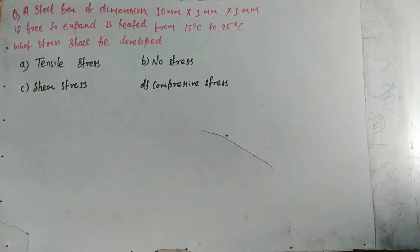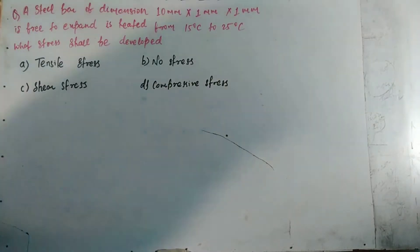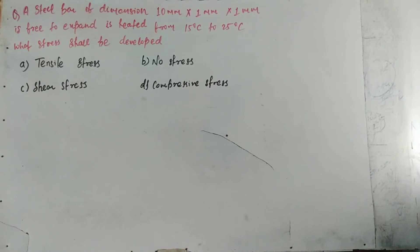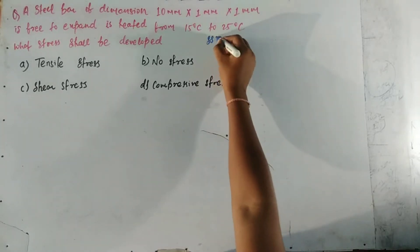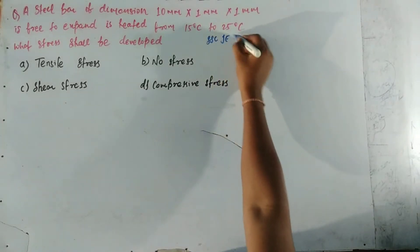The options are: A. Tensile stress, B. No stress, C. Shear stress, and D. Compressive stress. According to the question, a steel bar is heated from 15 degrees Celsius to 25 degrees Celsius with dimensions 10 mm x 1 mm x 1 mm. We have to find the correct option for the stress developed on the steel bar.